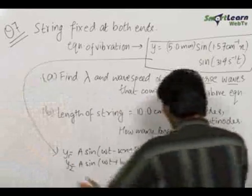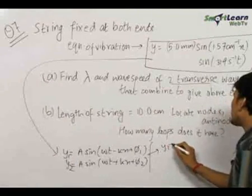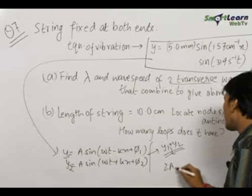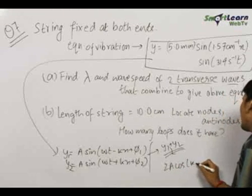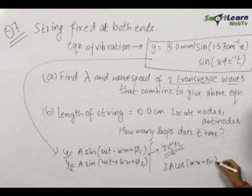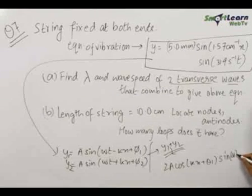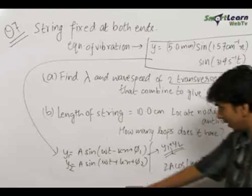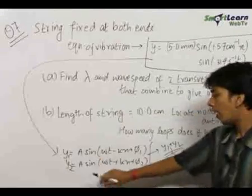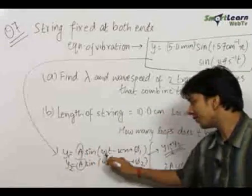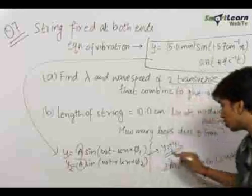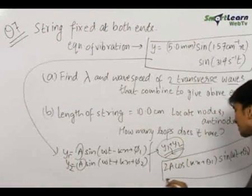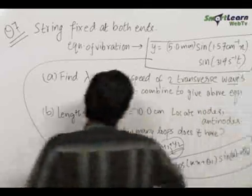that is y₁ plus y₂, to give the standing wave of the format 2A cos(kx + θ₁) sin(ωt + θ₂). You should remember that whenever there are two waves of same amplitude and same frequency, traveling in opposite directions, when they are superimposed, they give a resultant wave which is a standing wave.